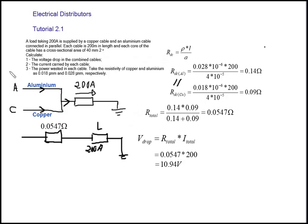The next question is to calculate the current carried by each cable and the power wasted in each cable. Since we already have the resistance calculated for each individual cable, we can use the current divider rule to find the current in each cable. It will be easier to redraw the circuit and revert back to the original parallel circuit.